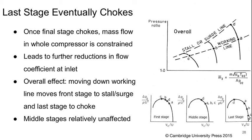Once that last stage eventually chokes, the mass flow of the whole compressor is constrained, leading to further restrictions in flow coefficient at the inlet. The overall effect is that moving down the working line moves the front stage towards stall or surge and the last stage towards choke, while the middle stages are relatively unaffected.